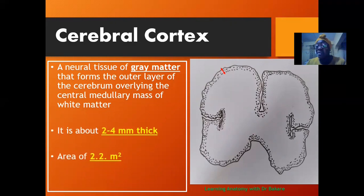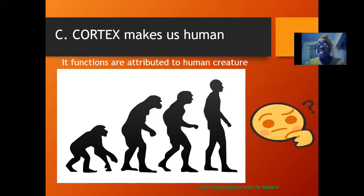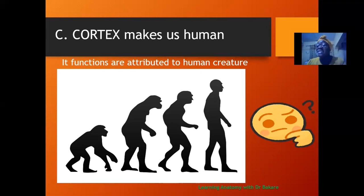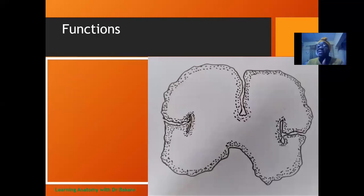The cerebral cortex is about 2 to 4 mm in thickness and covers about 2 meters squared. The cerebral cortex in humans is more diverse than what we see in other mammals, and this is what distinguishes us. Going through this lecture, we will be able to see the different functional areas that the cerebral cortex presents that make humans distinct from other mammals.